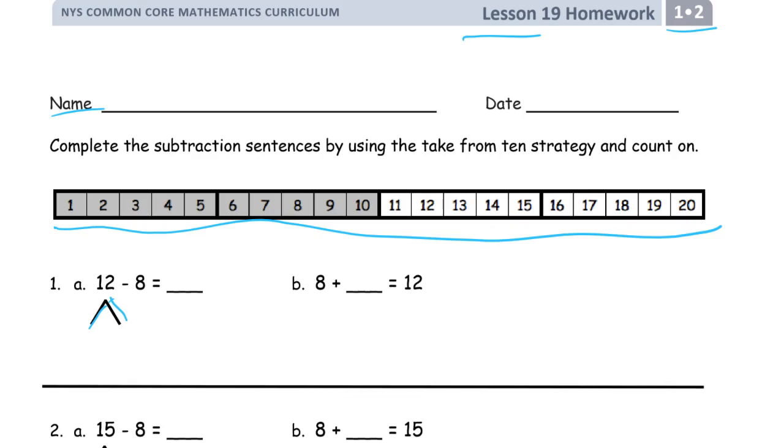So the take from 10 strategy. Here's 12. I need a 10 to take from, right? So it's 10, 2. It's 10, 2 because 10 plus 2 makes 12. Those are the two parts. Take the 8. We can't take 8 from 2, so we have to take it from 10. When we do, there will only be 2 left because that's what's left when you take 8 away from 10.